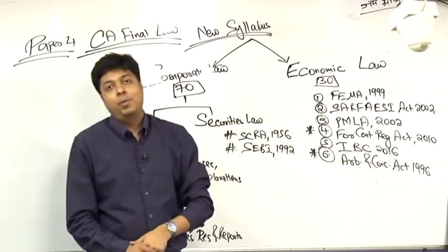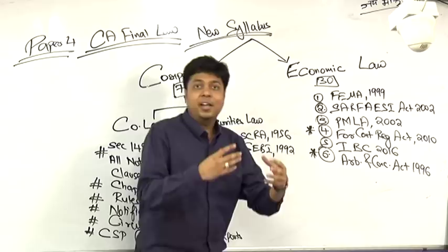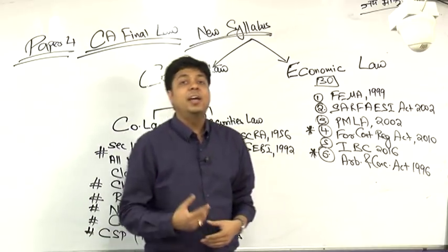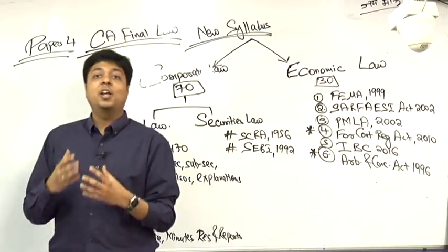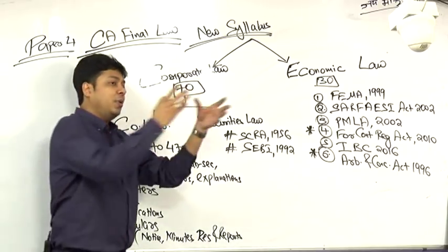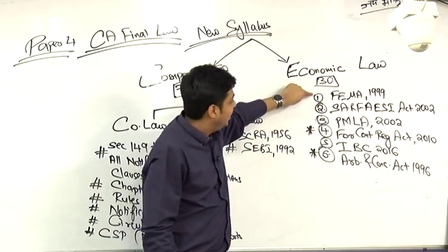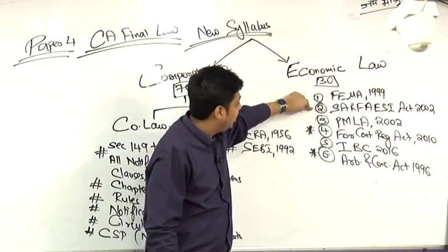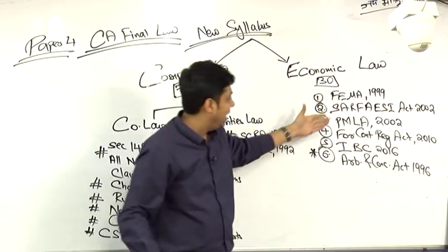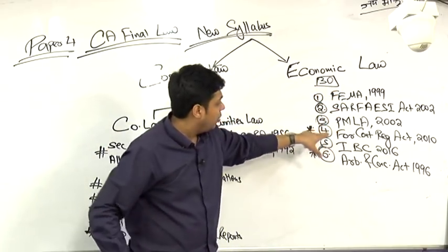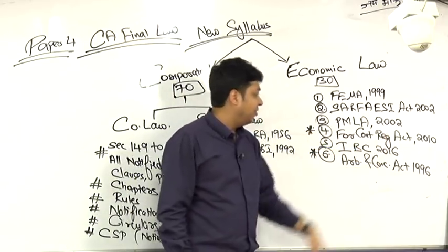Economic Law. First, Allied Law was there. Now Allied Law has been replaced with Economic Law. They have borrowed from CS Executive economic and commercial law. In that, they have put a portion of the economic law in CA Finals: FEMA 1999, SARFAESI 2002, PMLA Prevention of Money Laundering Act 2002, Foreign Contribution Regulation Act 2010, Insolvency Bankruptcy Code, Arbitration Conciliation 1996.